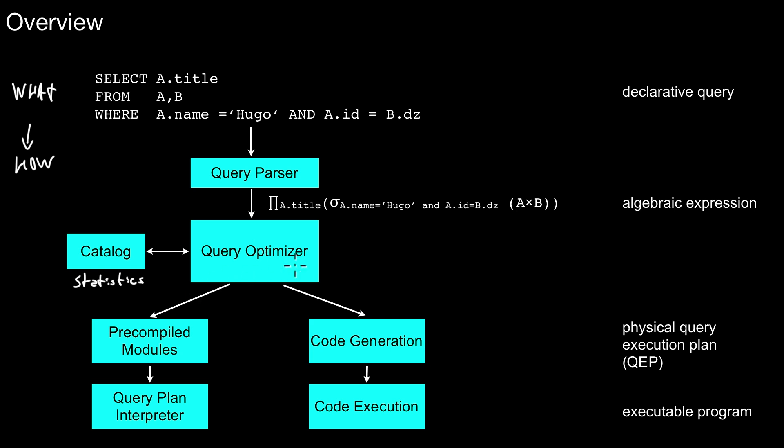And then there are basically two paths the query optimizer may follow. So one is it may rely on pre-compiled modules. So the modules are small code snippets like function calls in a library that can be exploited to generate a program.